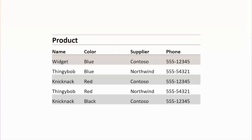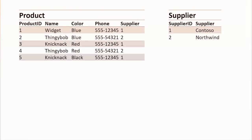There are still problems — looking at the supplier column, I see the same supplier stored in multiple rows. Contoso appears three times, Northwind twice. That data is duplicated, so if Northwind changed their name, I'd have to change it in each row — pretty inefficient, and using more space than necessary. At this point, we move into second normal form, where we start separating values into separate tables, each representing an entity in the database.